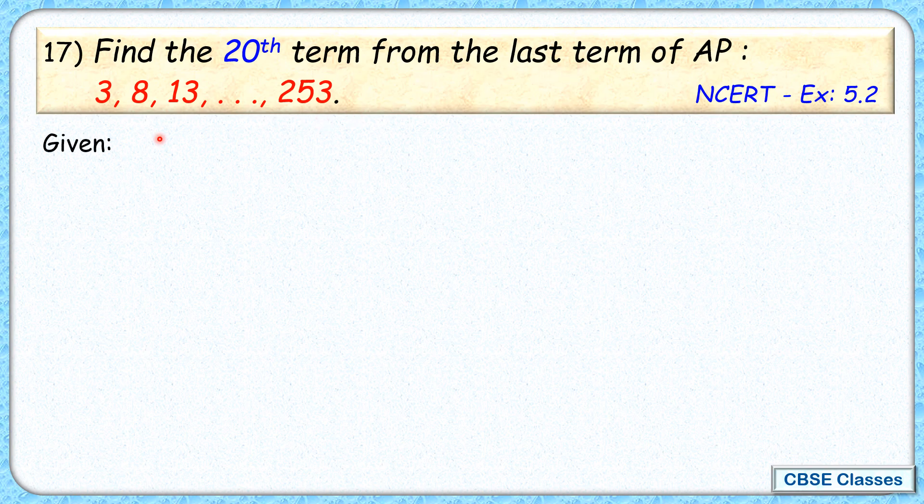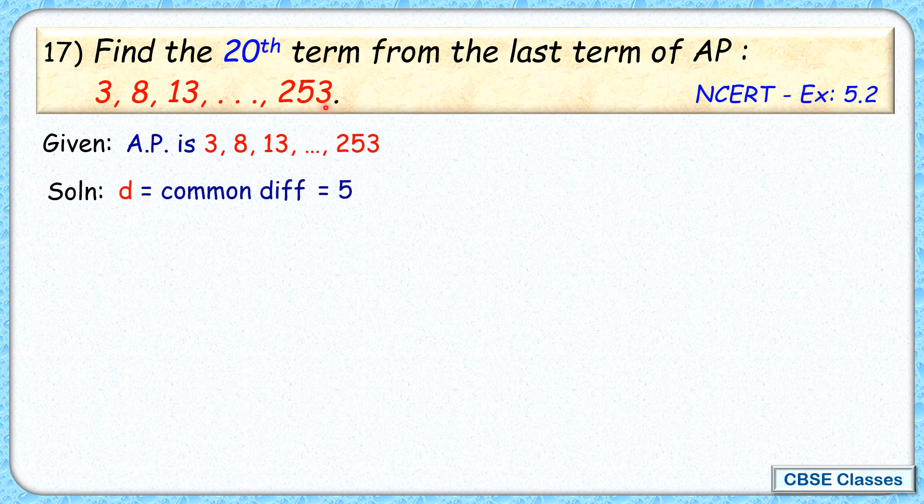So let's check the solution. Given to us is this AP and the common difference of this AP is 5. So if the last term is 253, then the second last term will be 5 less, that is 248. Third last term will be 5 less more, so that is 243.